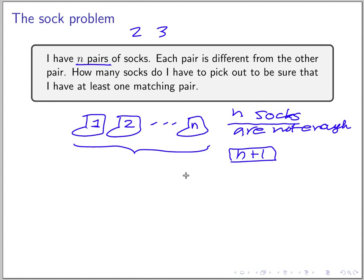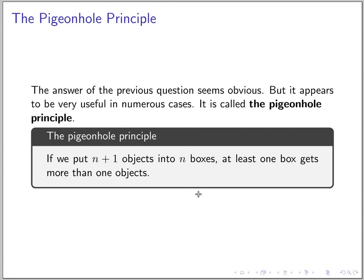This scenario commonly appears in mathematics, so they have a name for it. This is what mathematicians call the pigeonhole principle. The setting is like this: if you have n holes and if you put n plus one pigeons into these holes, at least two will go to the same box.